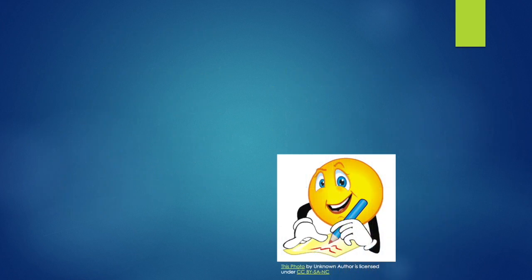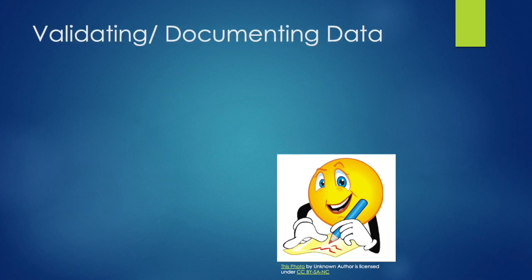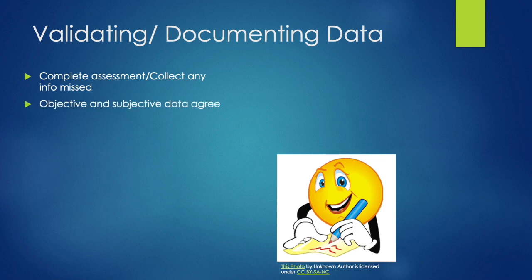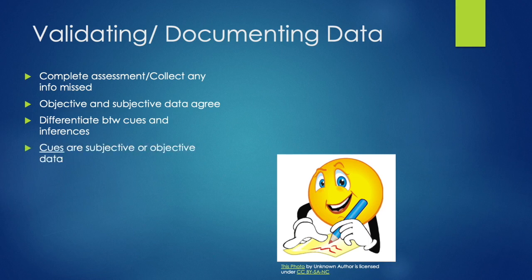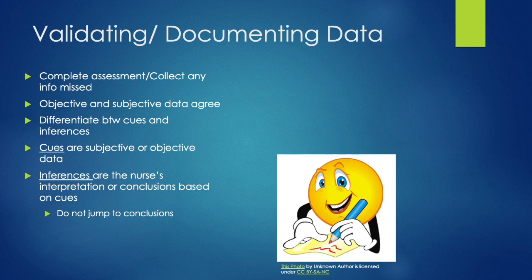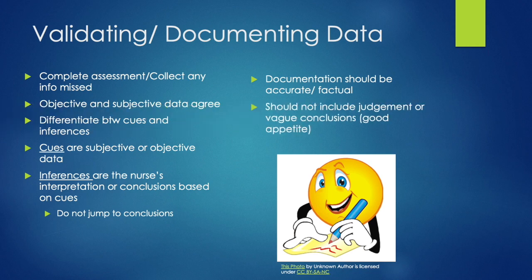With assessing, remember to collect, organize, validate, and document the data. When validating, make sure you have a complete assessment and collect any information you missed. Ensure your objective and subjective data agree — if what you're observing doesn't match what the patient states, investigate further. Differentiate between cues (subjective or objective data) and inferences (the nurse's interpretation based on cues) — don't jump to conclusions; make sure all inferences are logical and based on actual cues. When documenting, make sure data is accurate and factual, with no patient judgment or vague conclusions like 'good appetite' — instead, include the percentage of food consumed.